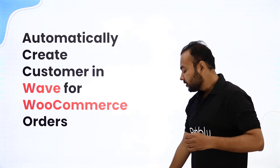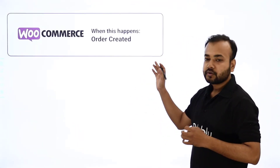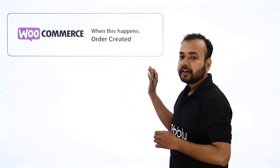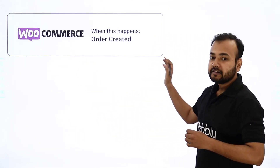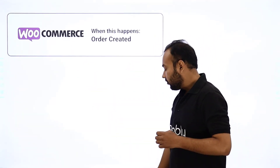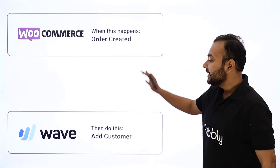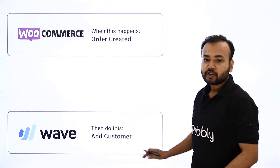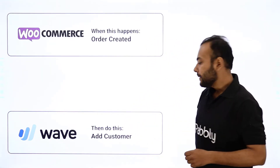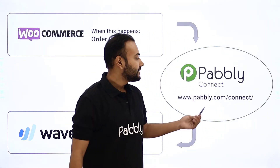Let me show you how the workflow of this automation will look like. I have taken the example of a WooCommerce store — an e-commerce store created with the help of WooCommerce. Whenever any order is created here in this store, the person who is making the order will get automatically saved here in WAVE CRM application as a new customer. This can happen, and to make this happen we are using a software called Pabbly Connect.